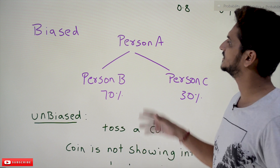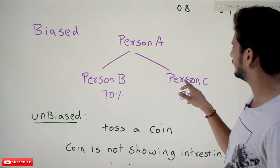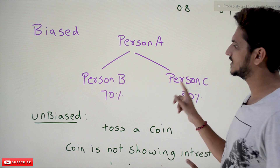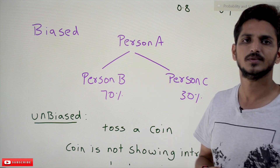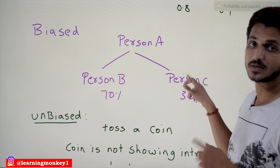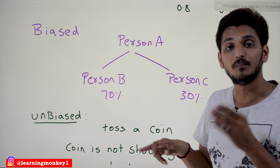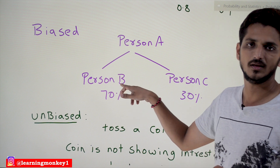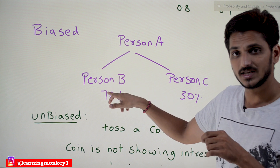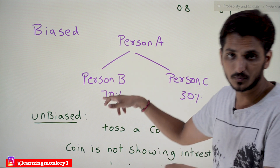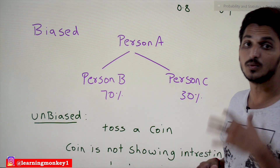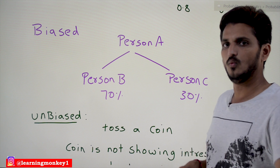Biased means showing more interest toward one particular side. For example, Person A has two friends: Person B and Person C. He likes Person B 70% and Person C 30%. Both friends invite Person A to their functions. The chance that Person A goes to Person B's function is 70%, and only 30% chance he goes to Person C's function. Person A is completely biased toward Person B — that is what biased means.